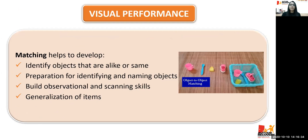Under visual performance, there are matching activities. We start with object-to-object matching using identical objects — the child has to identify objects that are alike. When we choose objects, we choose objects that are functional, meaning objects the child uses in everyday life, such as favorite food or clothing. It prepares the child for identifying and naming objects.